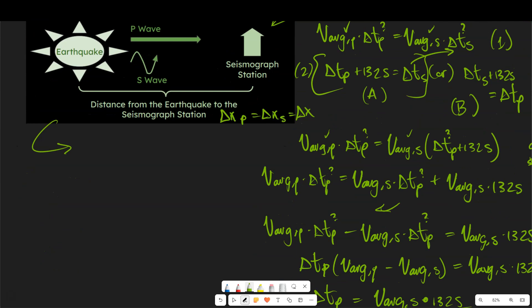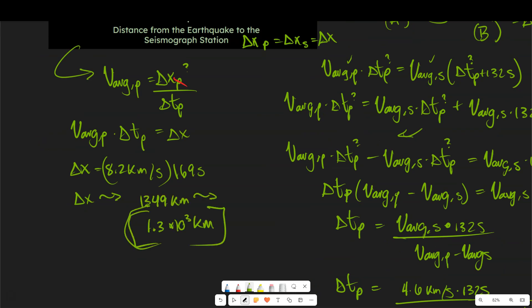So we're just going to write our basic average velocity equation here. And again, we're trying to solve for this. So we'd say... And rounding off the two sig figs, we end up with 1.3 times 10 to the third kilometers.